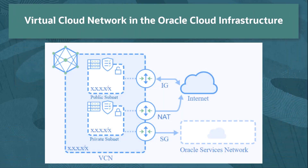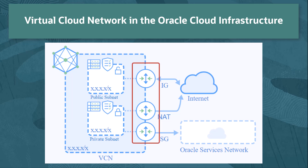A virtual cloud network, or VCN, is a virtual private network that you set up in the Oracle Cloud Infrastructure. It closely resembles a traditional network with firewall rules and specific types of communication gateways and network service components.